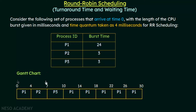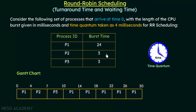Here I will explain how the Gantt chart is formed. All processes P1 to P3 arrive at time zero, so they wait in order P1, P2, P3 in the ready queue. P1 gets the CPU at the zeroth millisecond. P1's burst time is 24 milliseconds, but in round robin scheduling it will only be allowed to execute for the time quantum of 4 milliseconds. So P1 executes from 0 to 4 milliseconds.